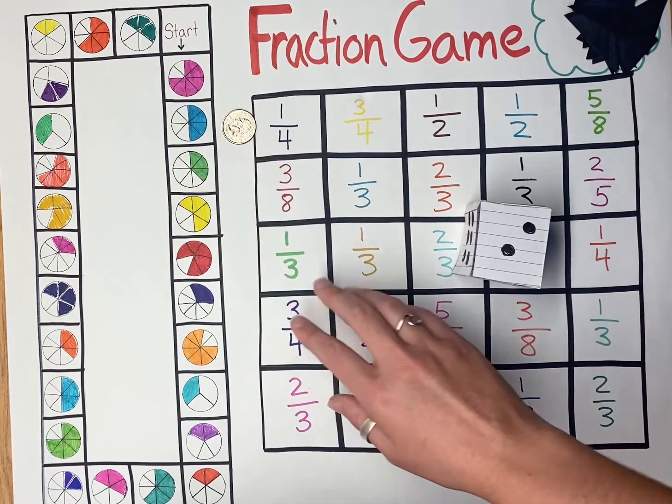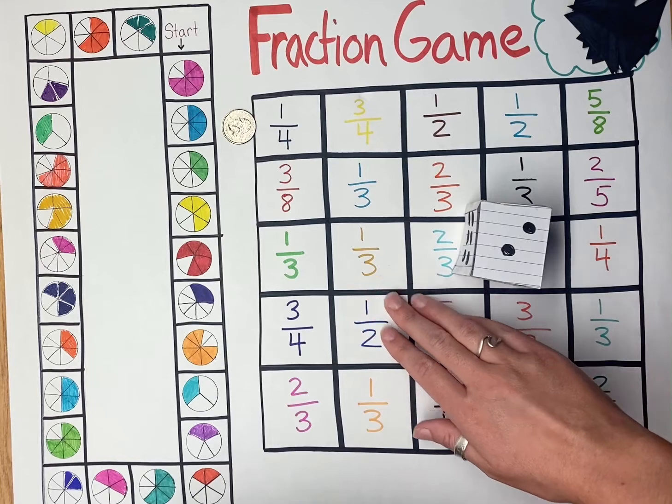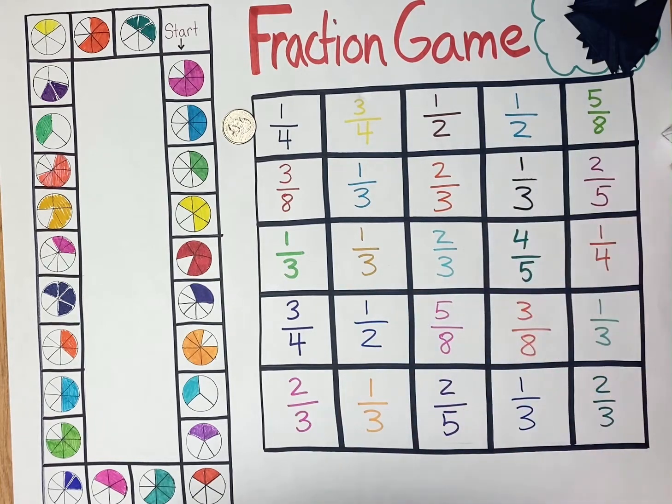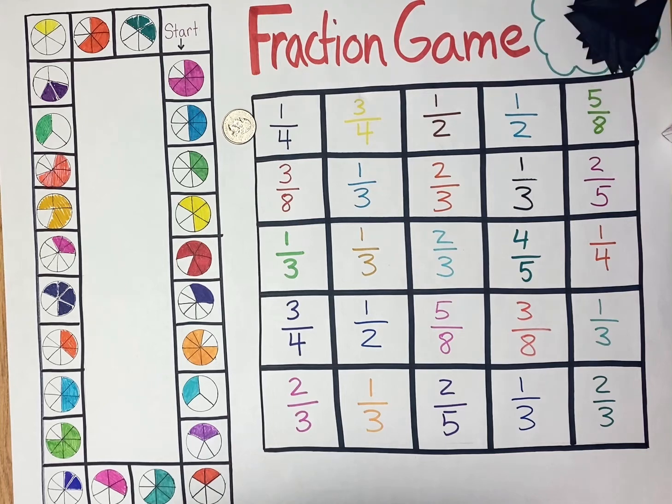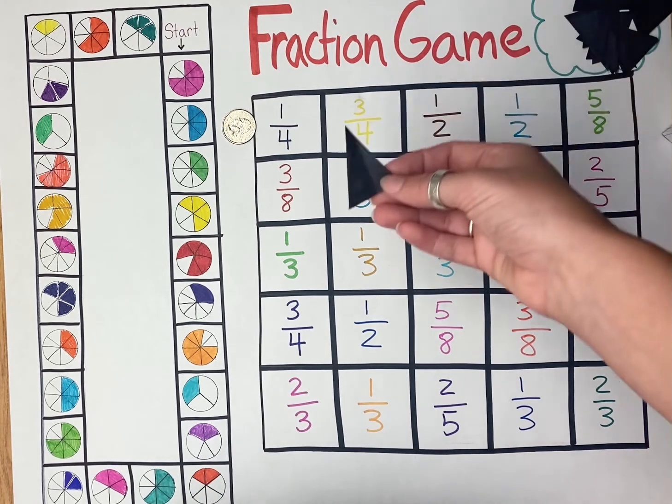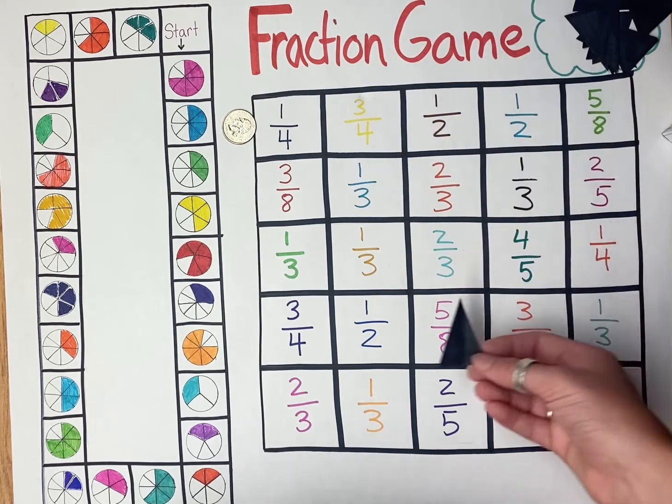The students will then look at the game board to see if four eighths is an option. Once they look at the board, they'll realize that four eighths is not an option and will have to simplify their fraction. The simplified version of four over eight is one half. The students will then take their game chip and put it on a one half.